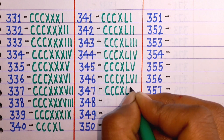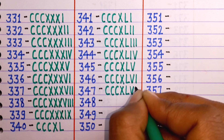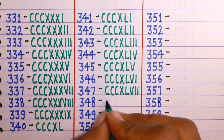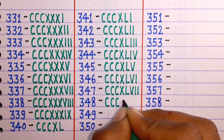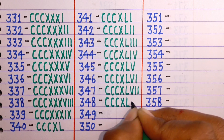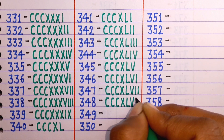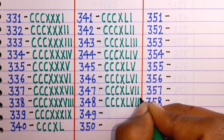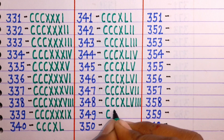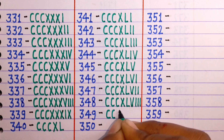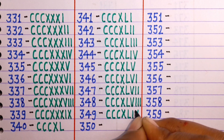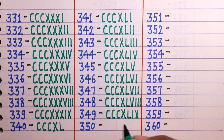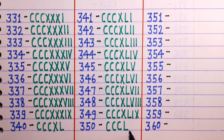347 is CCCXLVII. 348 is CCCXLVIII. 349 is CCCXLIX. 350 is CCCL.